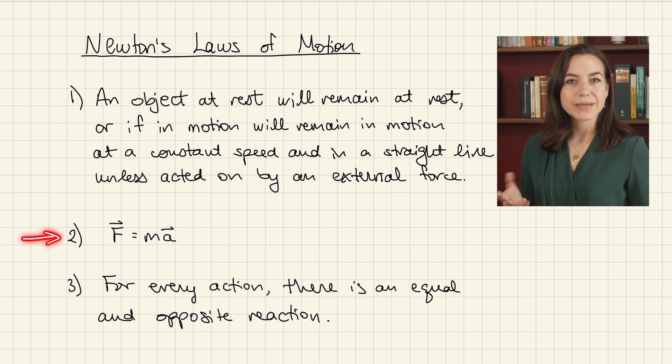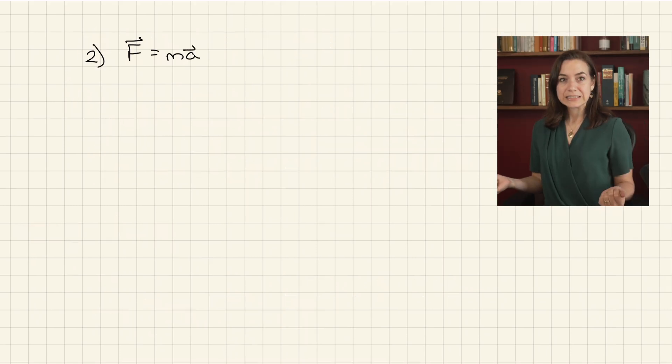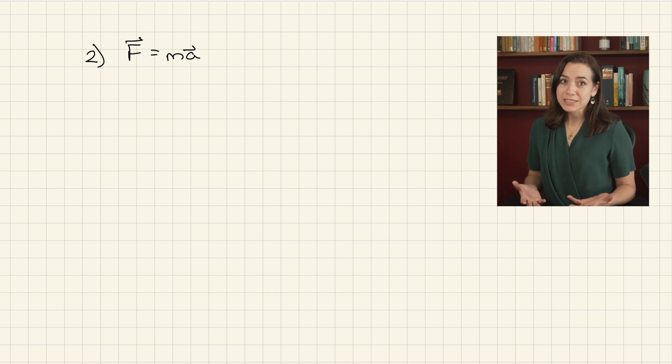We'll start with the second law because it's the most used one. F equals mA, right? Wrong. But wait, isn't that what I just wrote down? Yes, unfortunately, Newton's second law is often referred to in this way. F equals mA, practically synonymous with physics. But writing it in this way is misleading at best, and at worst, just plain wrong.